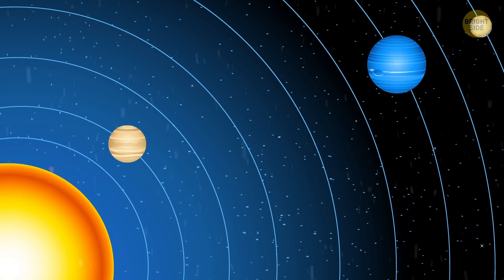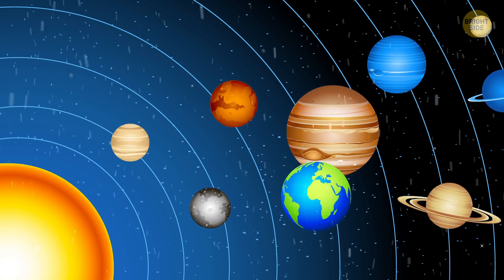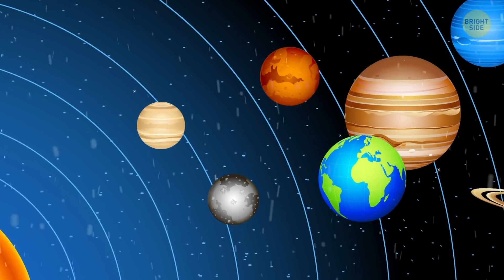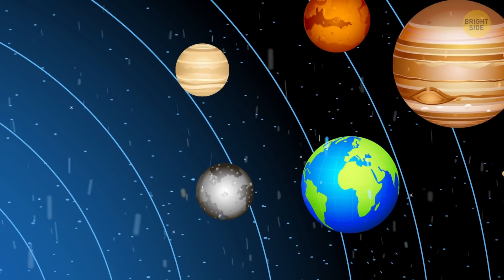As you might remember, the star's gravitational pull decreased along with its size. That's why the gas giants further from the sun, like Uranus, Saturn, Neptune, and Jupiter, simply drifted away.